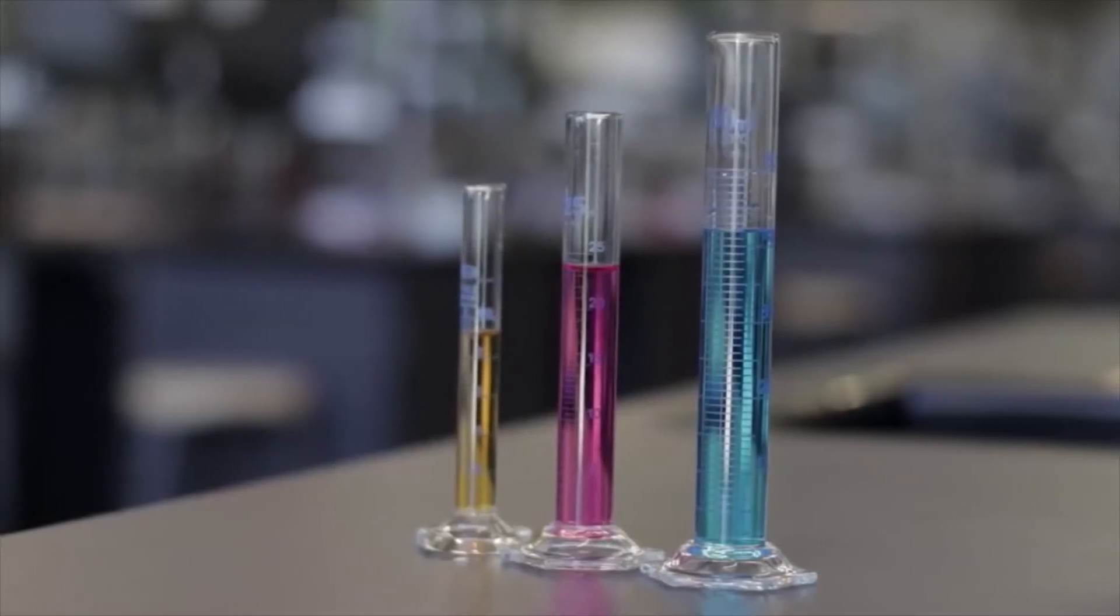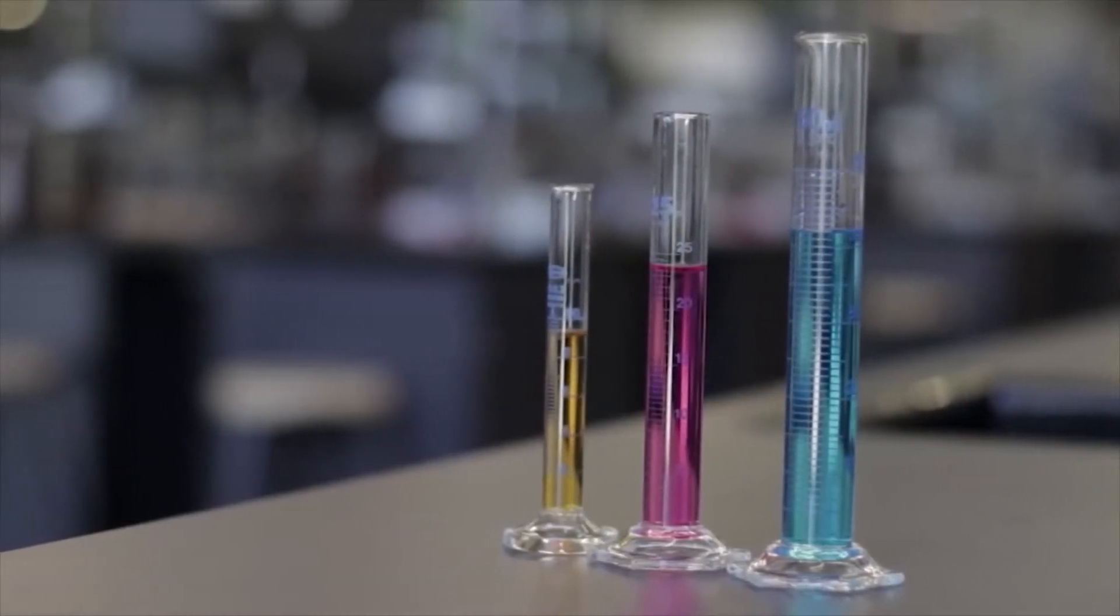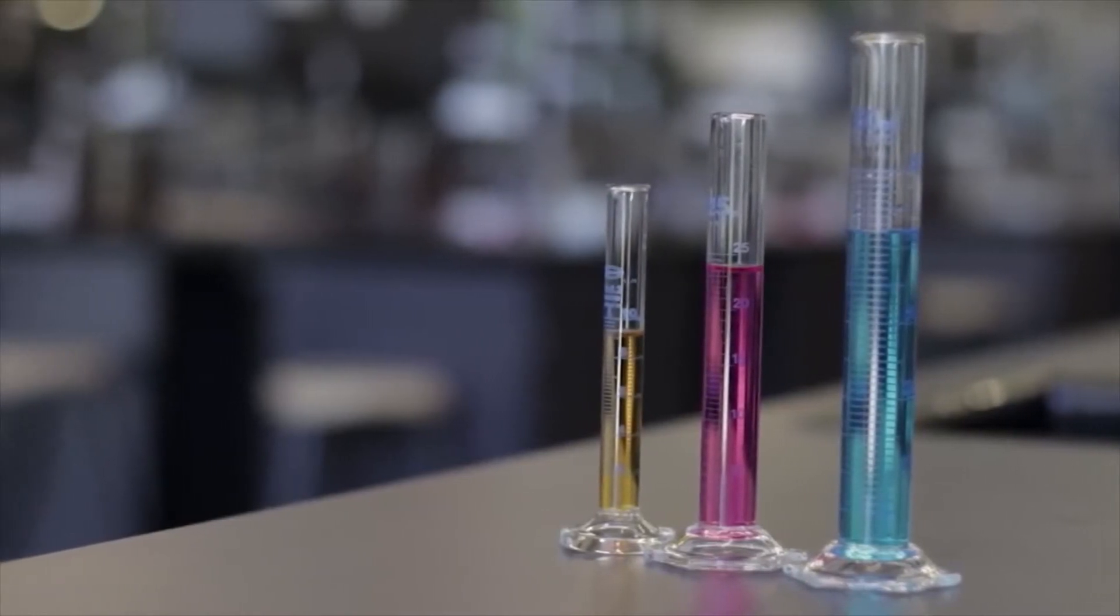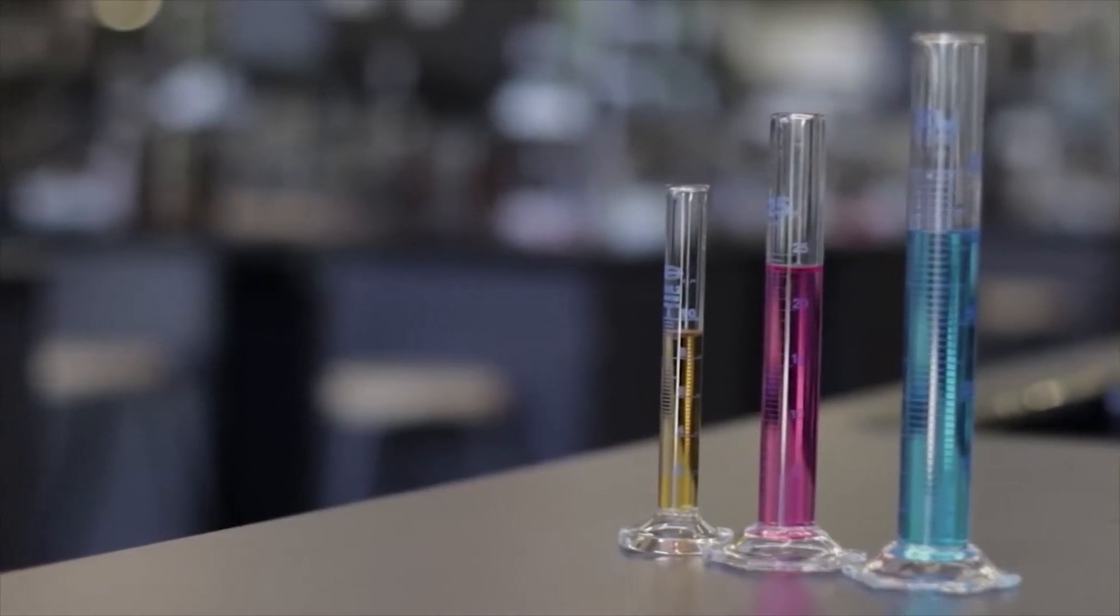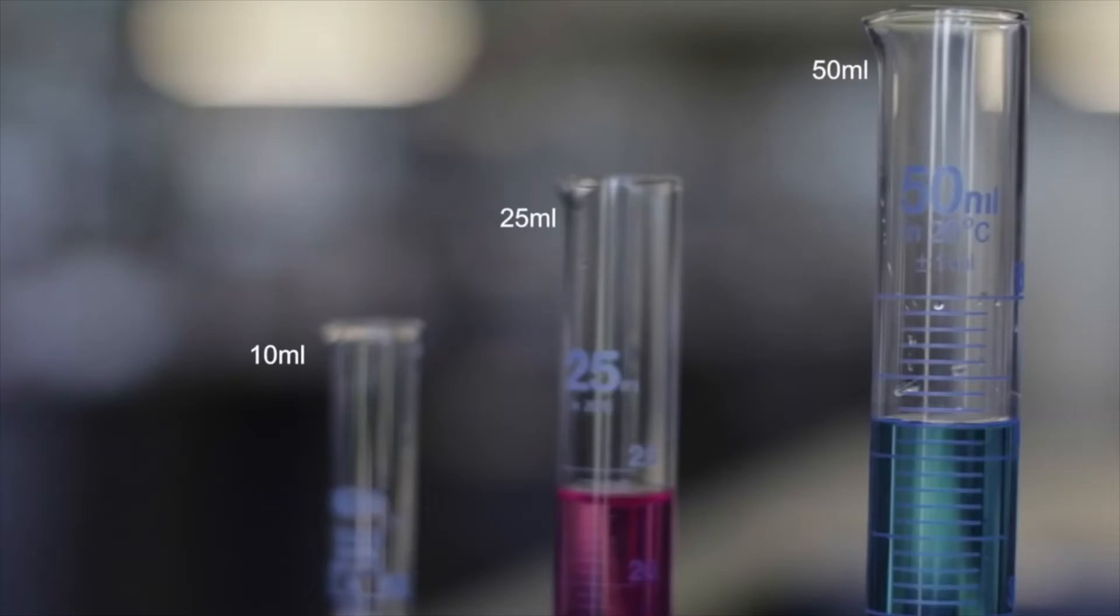A measuring cylinder is used to measure a certain volume of liquid, but is not as precise as a pipette or burette. It is found in different volumes. The volume of the measuring cylinder is found here.